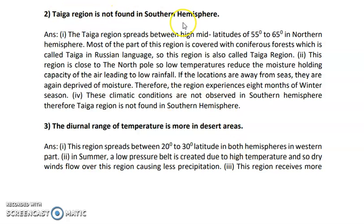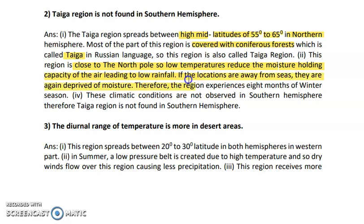Taiga is not found in the southern hemisphere. Taiga lies between the latitudinal extension of 55 degrees to 65 degrees in the northern hemisphere, mostly covered with coniferous forest — called taiga in the Russian language. This region is close to the north pole, so there is tremendous low temperature here, which reduces the moisture-holding capacity of the air, leading to low rainfall. Locations away from the sea are further deprived of moisture, and the region experiences 8 months of winter season. These climatic conditions are not observed in the southern hemisphere; therefore, taiga is not found there.